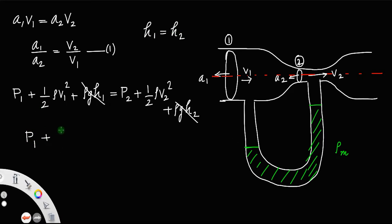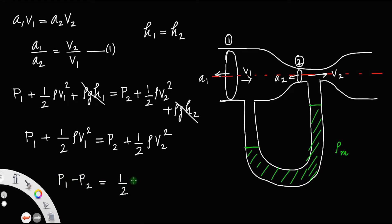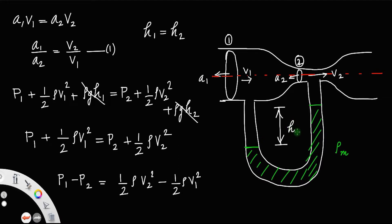The equation simplifies to P1 + half·rho·V1² = P2 + half·rho·V2², giving P1 − P2 = half·rho·(V2² − V1²). This pressure difference is measured using the U-tube manometer by the difference in mercury levels, h, so P1 − P2 = h·rho_m·g.